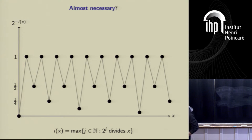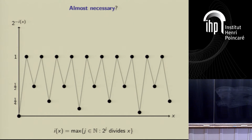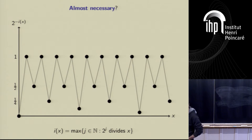Let me tell you about this weird function, and then I'll move on to the second part of the talk. I define the function so that at each point x, I look for the largest power of two that divides x and take the function to be one over that power of two. At x = 2 it's one-half, at x = 4 it's one-quarter, at x = 2^j it's 1/2^j. At x = 2^j × 3 it's also 1/2^j. At all odd numbers it's back to one. This function has very repetitive algebraic structure — not periodic, but nearly periodic.